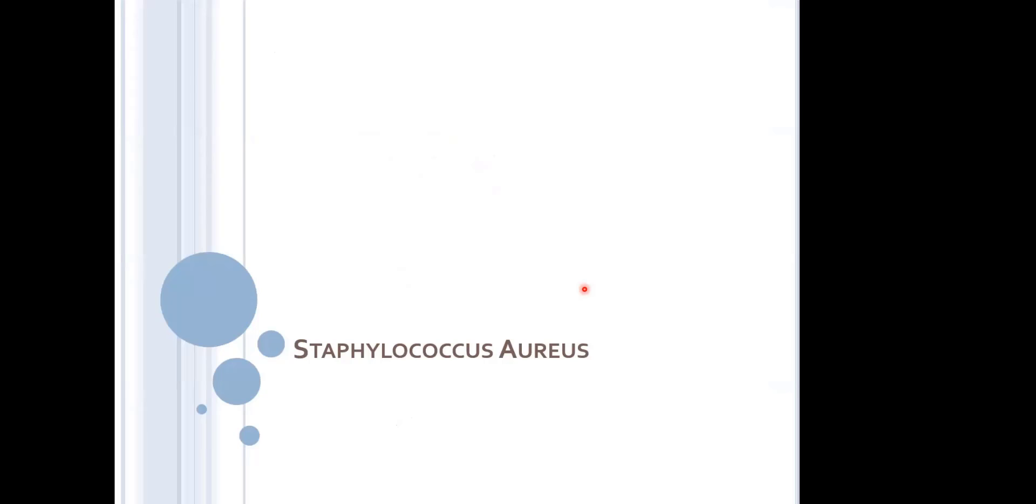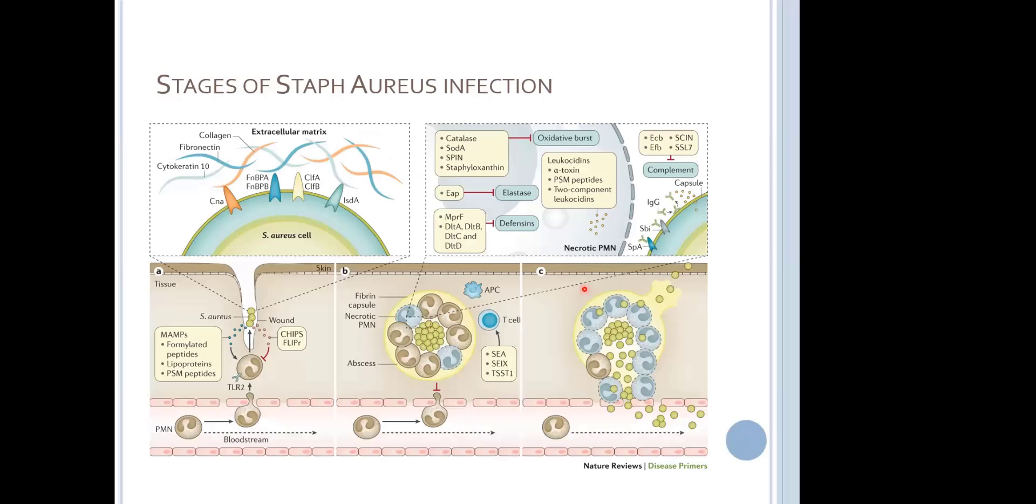Staph aureus is another species of extracellular bacteria, and its primary site of entry is the skin, not the lung. This very complicated Staph aureus cell lives on the skin and interacts closely with the extracellular matrix created by the skin.